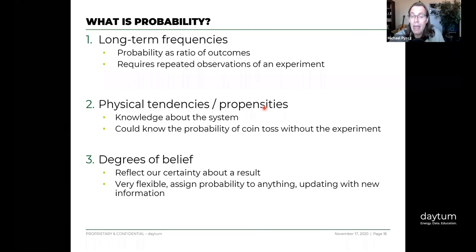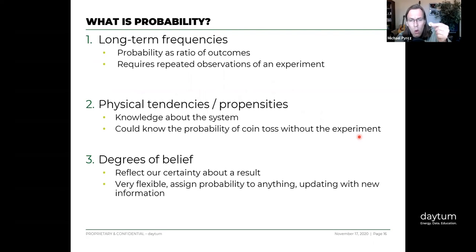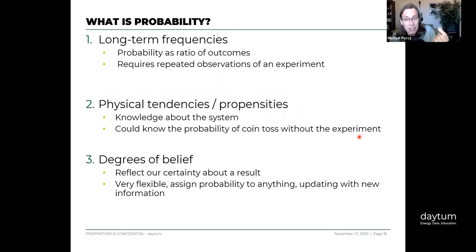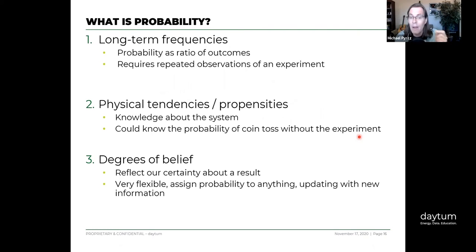Physical tendencies and propensities of the system is another perspective - we can calculate a probability from our understanding of the behavior of a system, our knowledge about it. Could you know the probability of a coin toss without an experiment? I think you could. You could look at the physics, the weight distribution, moment of inertia, and the way it's tossed - we could figure out it's 50-50, with only about a 1-in-100,000 chance to land on its edge.